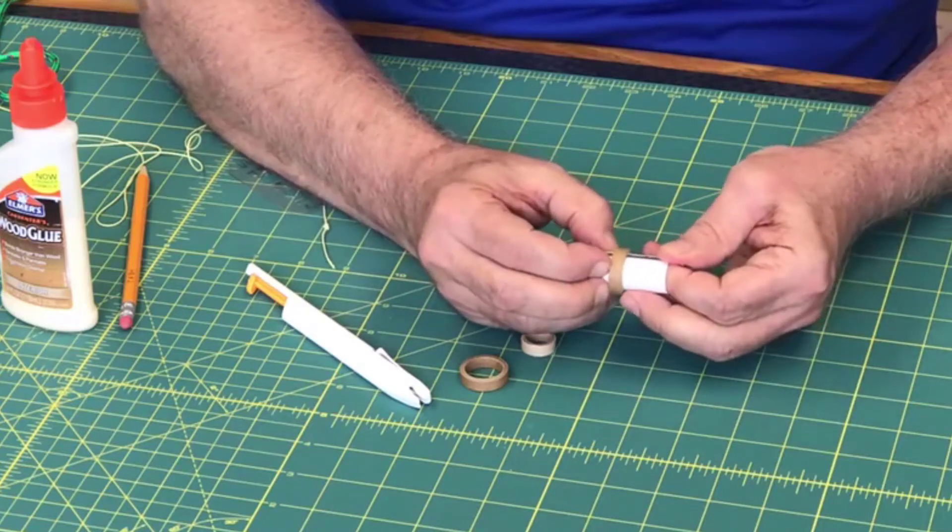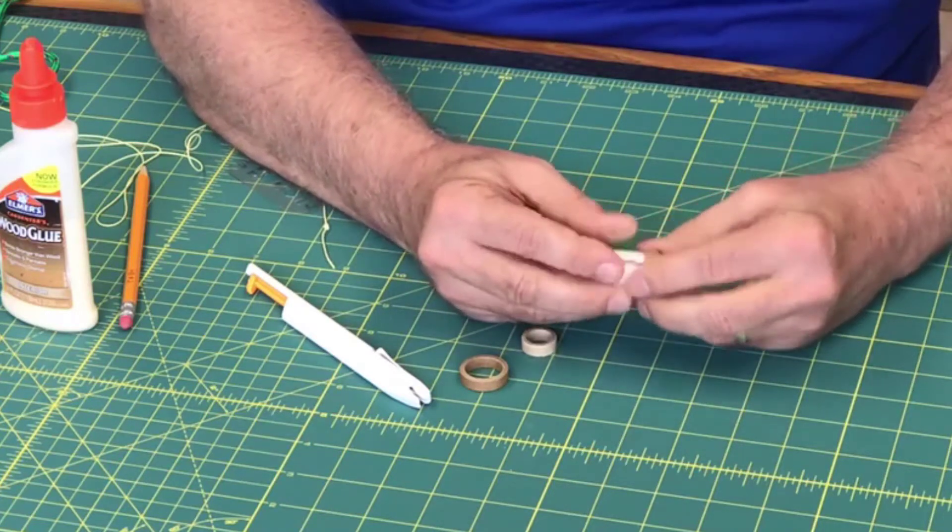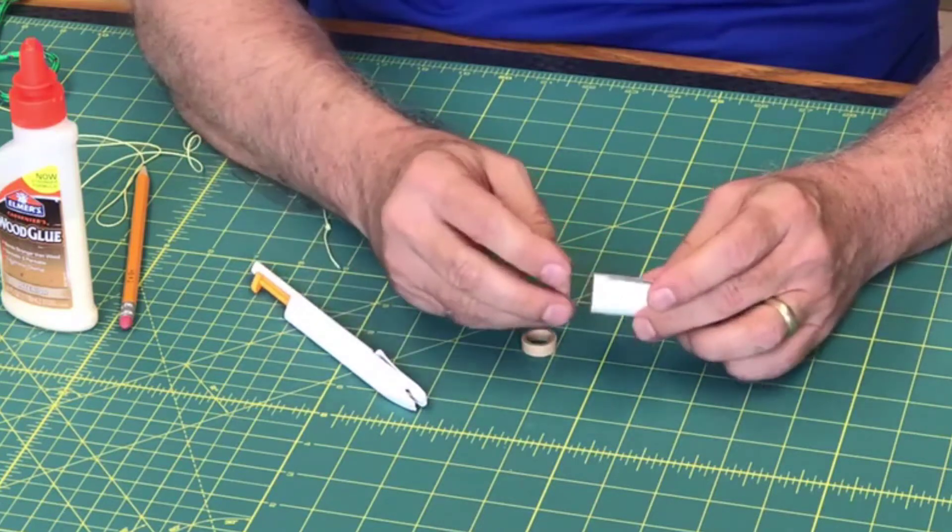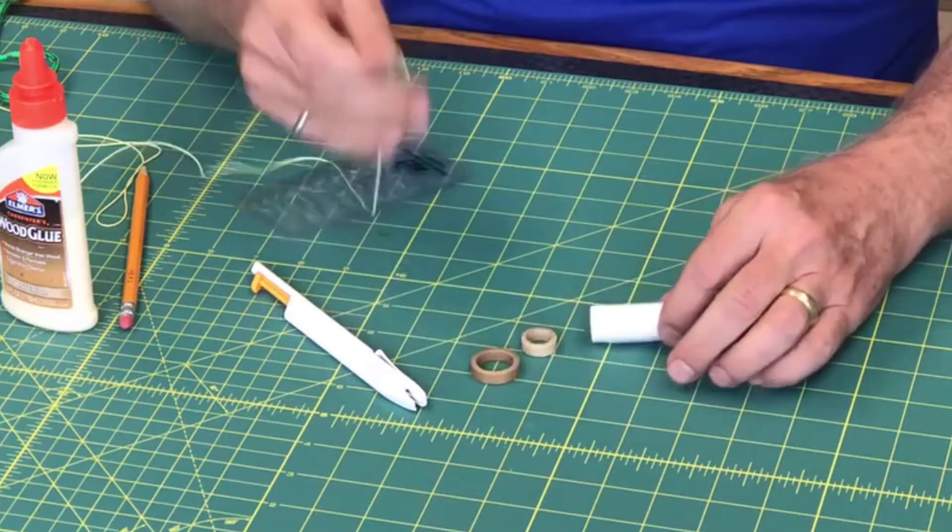Slide it down somewhere near that 12 millimeter mark. It doesn't really matter where it is right now. And now the second one—before you slide it on, we need to be sure to put the shock cord on because we want it on the other side of that.